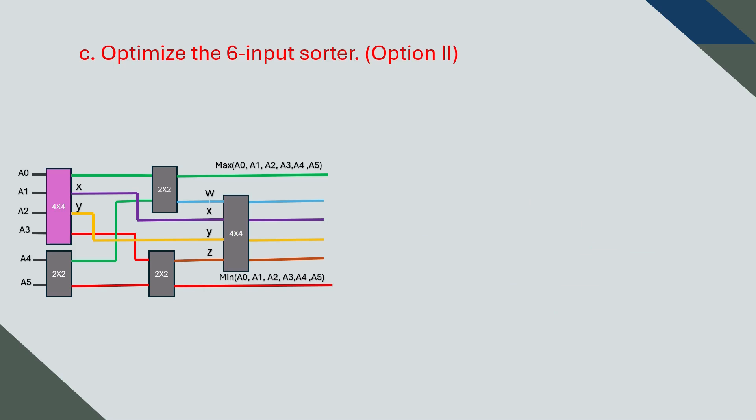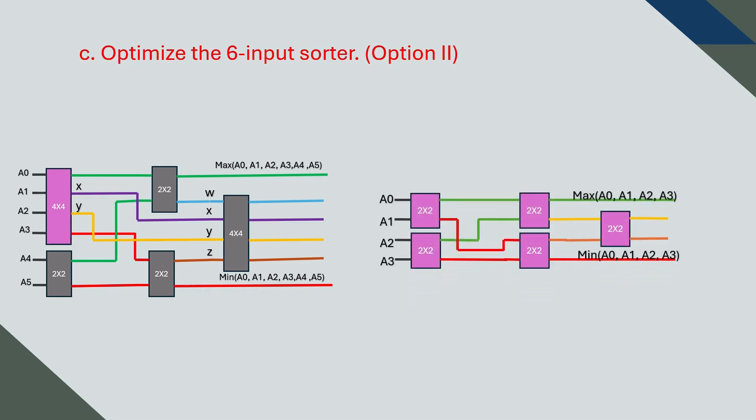We can optimize the system in a different way by analyzing another part of the design. This time, instead of focusing on the right-side four-on-four sorter, let's turn our attention to the left-side four-on-four sorter and break it down into its basic two-on-two components to look for further optimization opportunities.